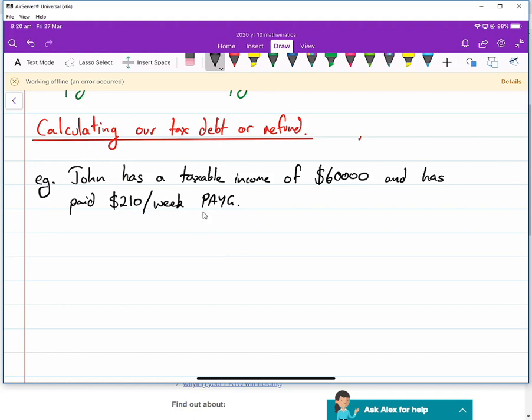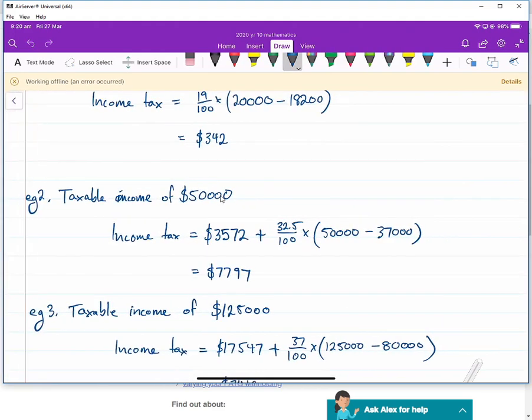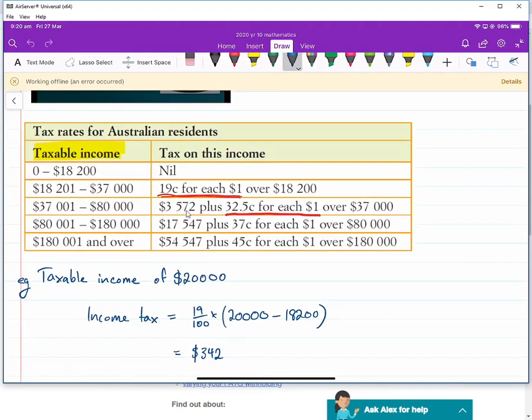We know his taxable income and we know how much tax he's been paying a week. The question is, will he get money back at the end of the year? Has he paid too much tax, or will he have a tax debt? And the way we calculate this is we firstly have to work out his total tax payable. We'll use the tax table. So let's look at the table for $60,000. It's $3,572 plus 32.5% over $37,000.